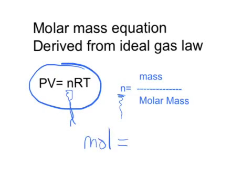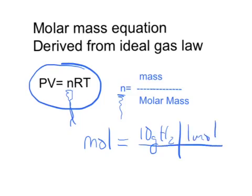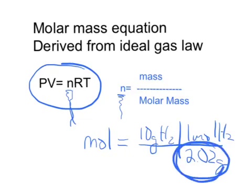Let's say you have 10 grams of hydrogen. You know that to get that to moles, we say 1 mole of hydrogen is 2.02 grams. And so this is the molar mass.